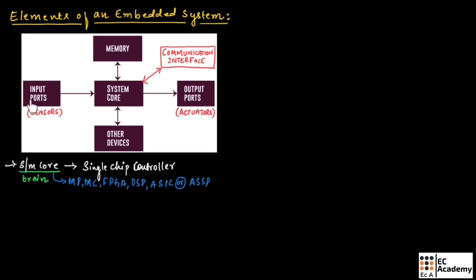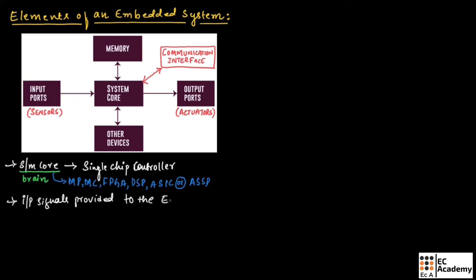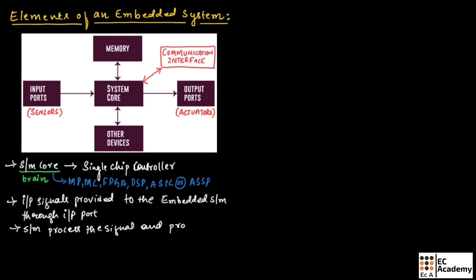The input signals are provided by the input port by the end user to the system core. The embedded system hardware and software are designed to regulate a physical variable or to manipulate the state of a system device by sending control signals to actuators connected at the output port.